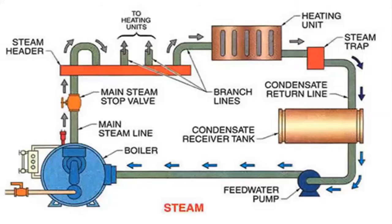Let's understand the basic cycle of the steam. We have a steam boiler, and then steam going through the steam header — the network of pipes connecting the steam. When this steam goes to the steam header through a main stop valve and main steam line, different heating units are connected, different pipes, everything is insulated. One such application shown here is a heating unit, which is nothing but a heat exchanger.